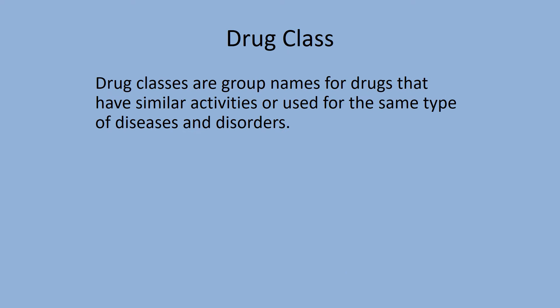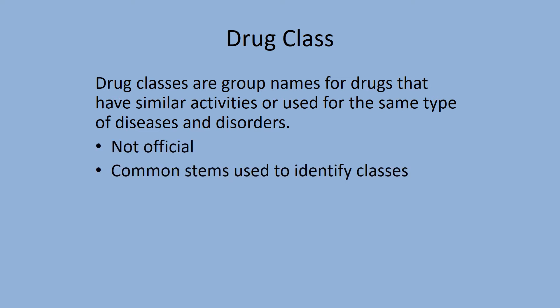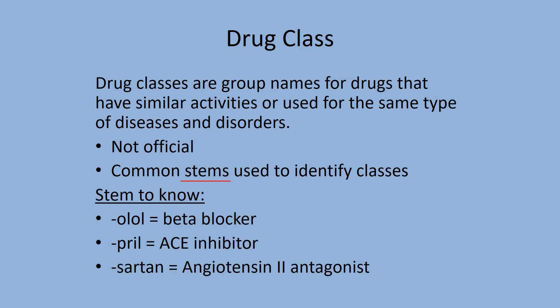Drug classes are not official, because one compound can actually be in many drug classes, and many drugs already in use will be researched for different uses. One way to recognize drugs easily is to learn the stems or roots of the medication name. For example, drugs ending in -olol are beta blockers — like atenolol and propranolol. Drugs that end in -pril are ACE inhibitors. ACE inhibitors are angiotensin converting enzyme inhibitors — angiotensin causes your blood vessels to constrict, so blocking that action prevents constriction. Sartan drugs are angiotensin II antagonists and work very similarly to ACE inhibitors.